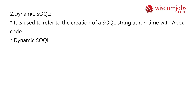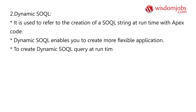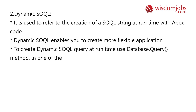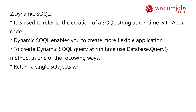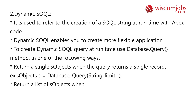Dynamic SOQL is used to refer to the creation of a SOQL string at runtime with Apex code. Dynamic SOQL enables you to create more flexible applications. To create a dynamic SOQL query at runtime, use the Database.query() method — either returning a single sObject when the query returns a single record, or returning a list of sObjects when the query returns more than a single record.